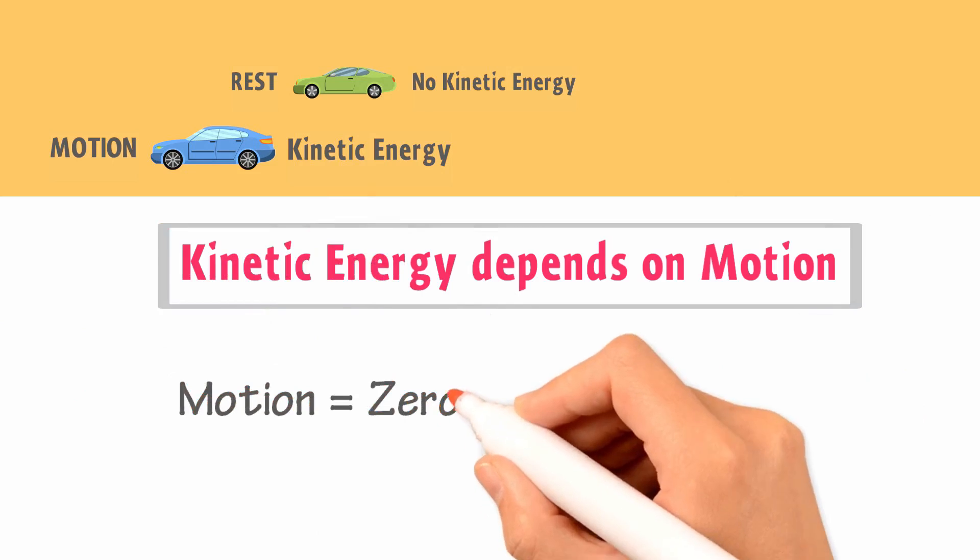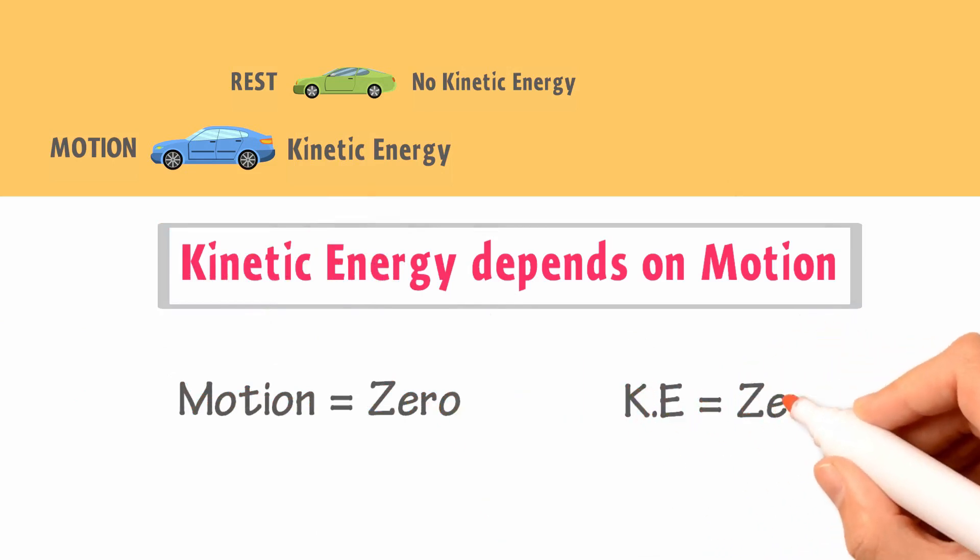we learn that kinetic energy directly depends on the motion of an object or on the magnitude of velocity. When motion or velocity is zero, kinetic energy will be zero.